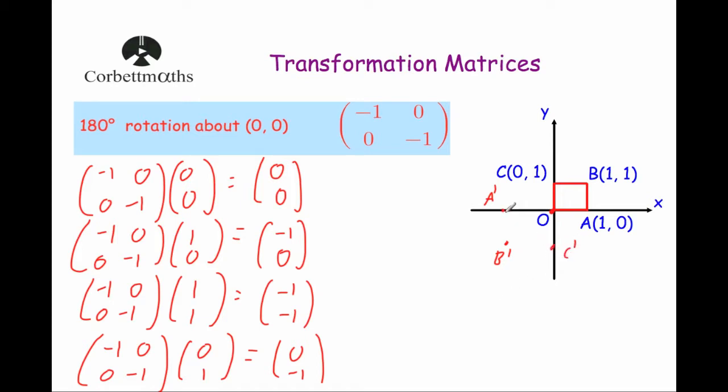And then whenever we draw the square, it should look something like this. And as you can see, that's 180 degrees of rotation about the origin. That's it.